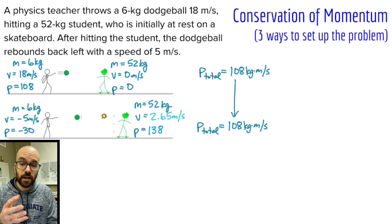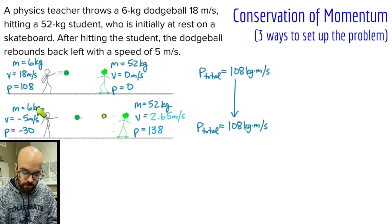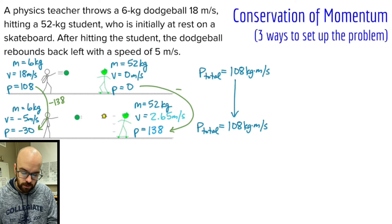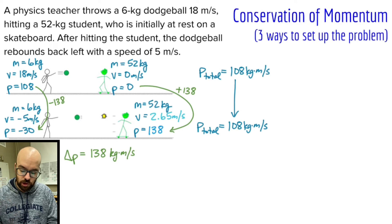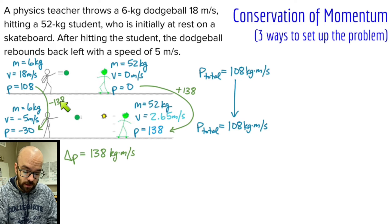Taking 138 divided by 52 gives a velocity of 2.65 meters per second, just like before. Another nice thing about this method is you can easily find the change in momentum for an individual object. The ball started with 108 kilogram meters per second and went to negative 30 — a change of negative 138. The student has the same magnitude of change in momentum but positive: plus 138 kilogram meters per second. This is a direct extension of Newton's third law — both objects feel the same force in opposite directions, so they have the same change in momentum magnitude, just opposite in sign.